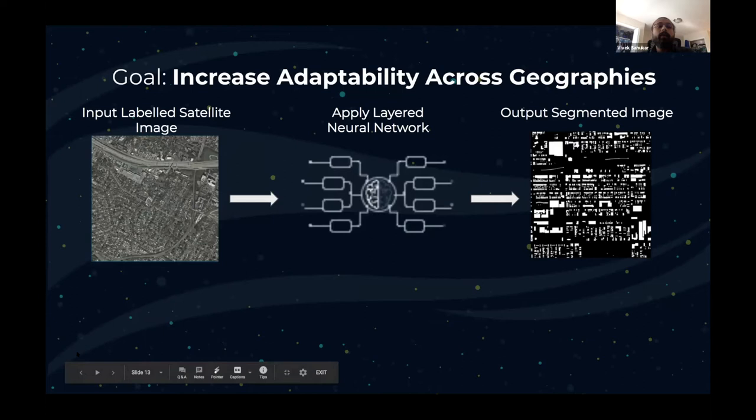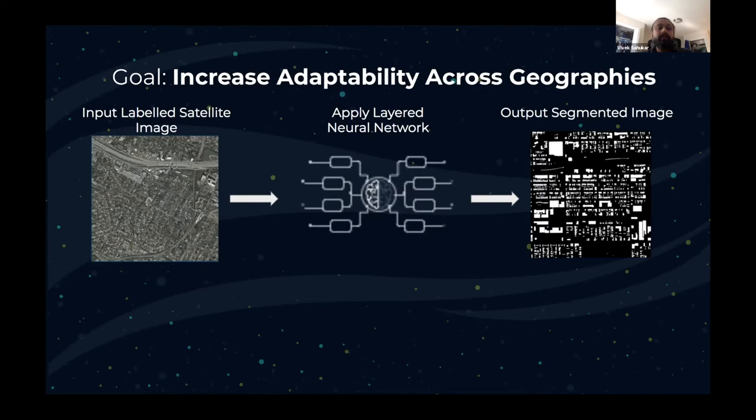We are building on last year's team's work, and our main goal this year has been to make our model generalize across different geographies. To achieve that, we need labeled satellite images where each object is identified in the training dataset. We pass that image through a neural network, and as an output we get a segmented image where the white pixels are the object of interest, such as a building, and black pixels are the area not of interest.